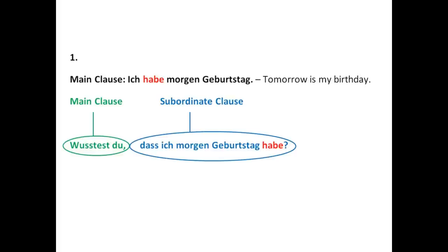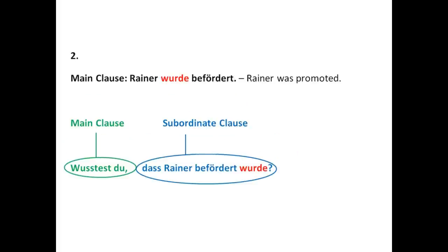Let's take a look at the second example: 'Rainer wurde befördert' — 'Rainer was promoted.' This is a passive voice sentence. We can see that the verb 'wurde' is in the second position. Now in the subordinate clause: 'Wusstest du, dass Rainer befördert wurde?' So the verb travels to the end of the sentence — it's not in the second position anymore, it's in the last position.